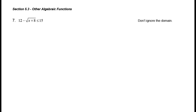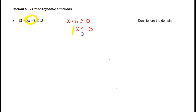Let's take a look at number 7. We have 12 minus the square root of x plus 8, which is less than or equal to 15. This problem says don't ignore the domain. So let's take a look at the domain of this function. We have x plus 8 under the square root symbol, so x plus 8 has to be greater than or equal to 0. That means x has to be greater than or equal to negative 8. So that is the domain of the function square root of x plus 8. I'm going to keep that in mind as I go through the algebra to solve the inequality.